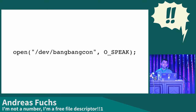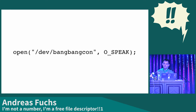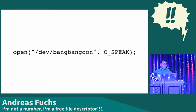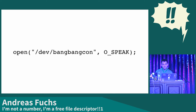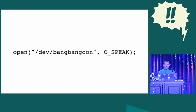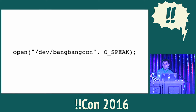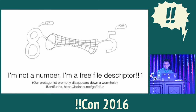Usually when we talk about files, we think of entries in the file system — some path name that points to something that has bytes in it. But those dormant file system entries aren't the kind of file I'll be talking about today. This talk is about the files that processes have opened, that they are reading and writing. These are called file descriptors.